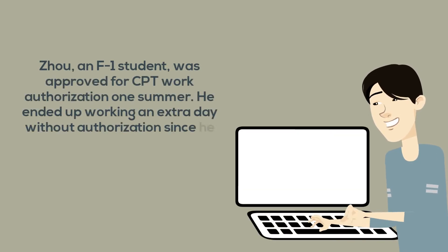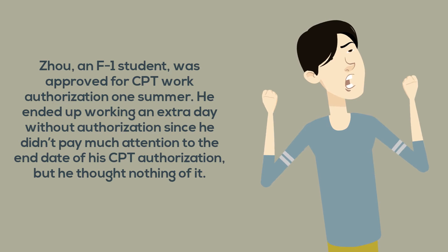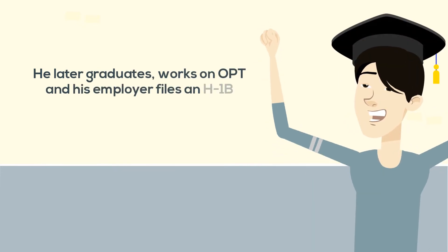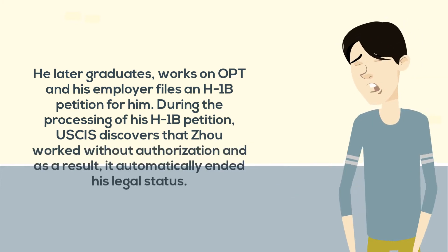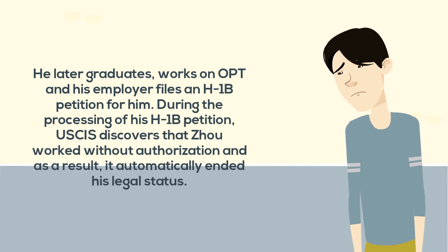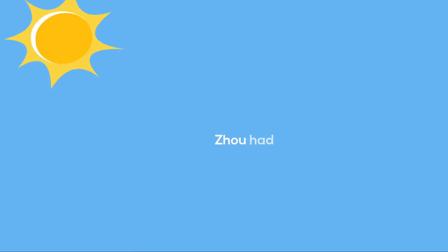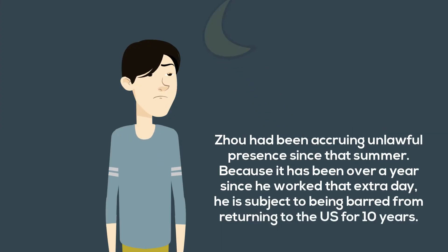The case of F-1 student Zhao. Zhao is an F-1 student who was approved for CPT work authorization one summer. He ended up working an extra day without authorization since he didn't pay much attention to the end date of his CPT authorization. He thought nothing of it. Zhao later graduates, works on OPT, and his employer files an H-1B petition. During the processing of his H-1B petition, USCIS discovers that Zhao worked without authorization, and as a result, it automatically ended his legal status. Zhao has been accruing unlawful presence since that summer. Because it has been over a year since he worked that one extra day, he is subject to being barred from returning to the U.S. for 10 years.